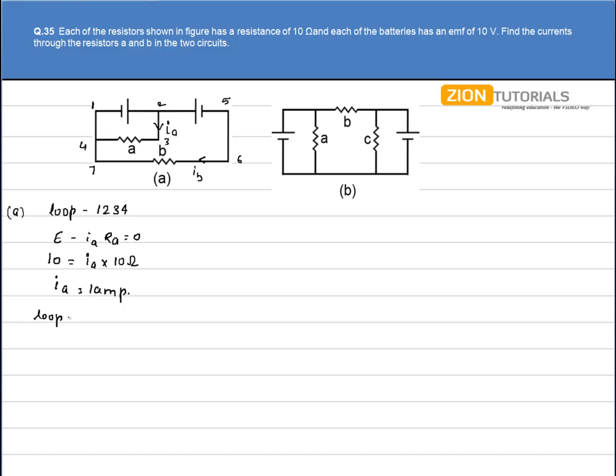In loop 1-5-6-7, if I apply Kirchhoff's law, I get plus 10 minus 10 minus IB into RB equal to 0. So clearly IB equals 0 from here.